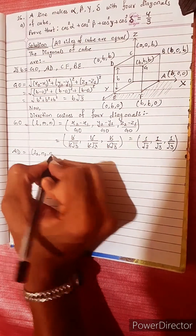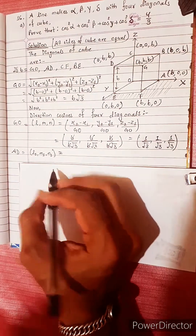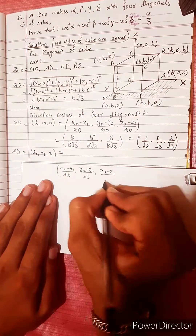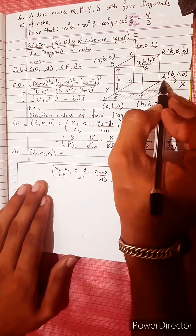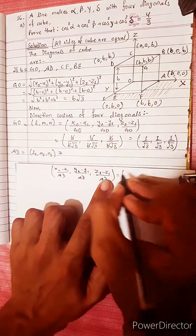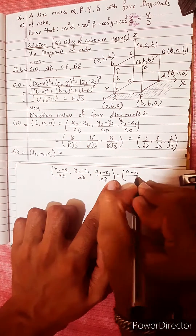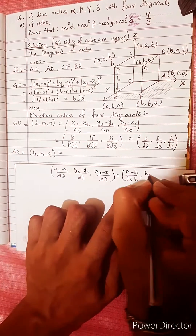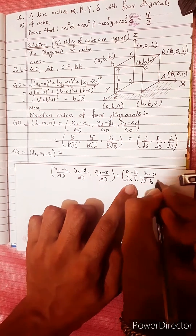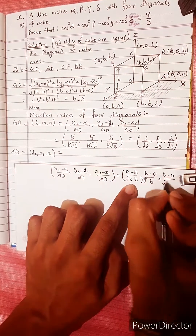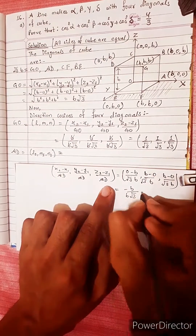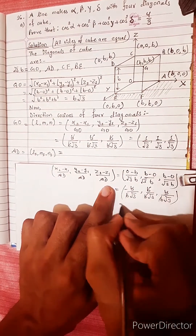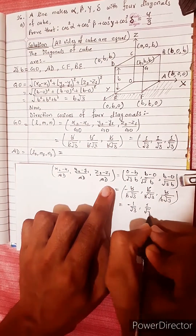Direction cosine L1, M1, N1 equals — using formula with point A and point D — (b − 0) divided by AD length (under root 3 · b), giving b/b√3 for each component. After cancellation: equals (−1/√3, 1/√3, 1/√3).